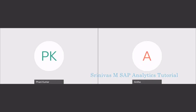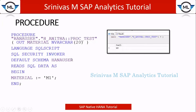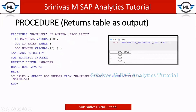In our last session we saw how to create a procedure which returns one single output value. In today's session we are going to learn how to create a procedure which returns a table format — first with a single column, and then we'll see multiple columns. So before going into this procedure, we are going to learn how to write a SELECT statement, get data into one internal table, and return it to the output screen.